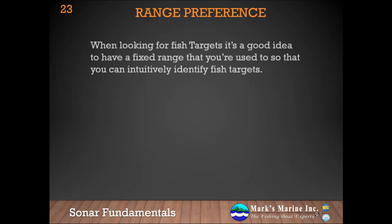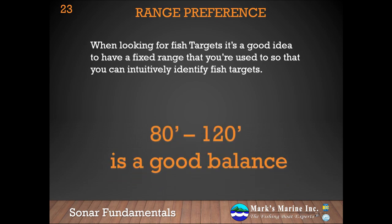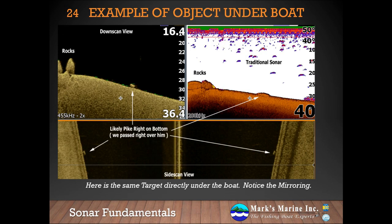What kind of range do I like? Generally, if I'm actively looking for suspended fish as opposed to trying to identify structure, a range between 80 and 120 feet is a really good balance — my personal preference is 100 feet. Those who may have noticed something in the previous example: we passed directly over a target that appears to be just off the bottom in both sidescan and downscan view. There's also some indication it's not directly on the bottom in traditional sonar, but it's very close, so we can't say definitively. There's no way to get any shadow separation given how close it is to the bottom.